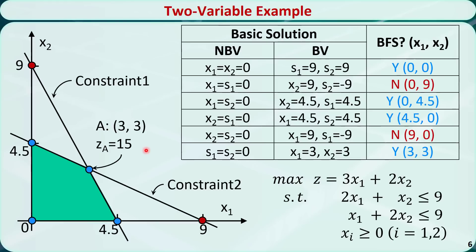The last theorem says if a linear programming problem has an optimal solution, there must be an extreme point that is optimal. Using the graphical method to solve the linear programming problem, you will find that point A is the optimal solution with Z equal to 15. Point A is an extreme point.